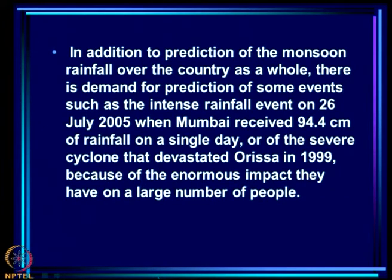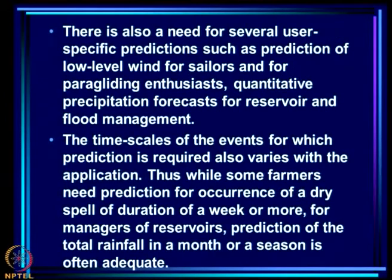Not surprisingly, the focus of monsoon prediction has been on seasonal prediction. In addition to prediction of monsoon rainfall over the country as a whole, there is a demand for prediction of intense events such as the 26 July 2005 event when Mumbai received 94.4 cm in a single day, or the severe Orissa cyclone of 1999. There is also a need for user-specific predictions such as low-level winds for sailors and paragliders, and quantitative precipitation forecasts for reservoir and flood management.